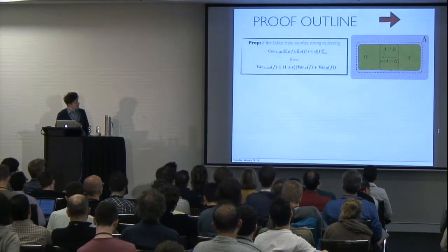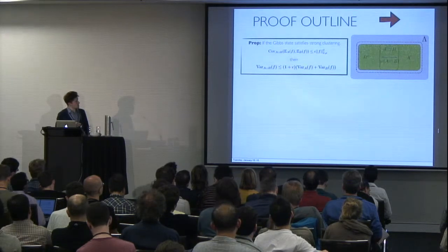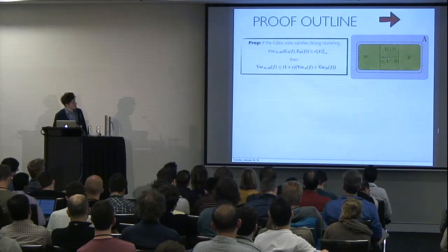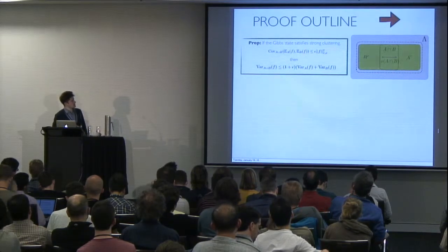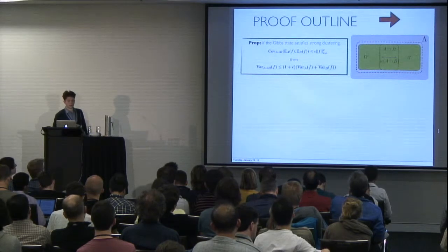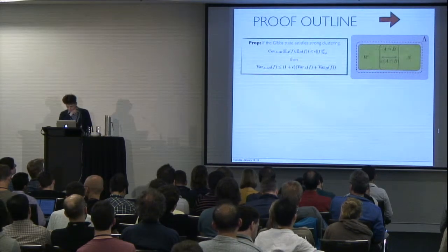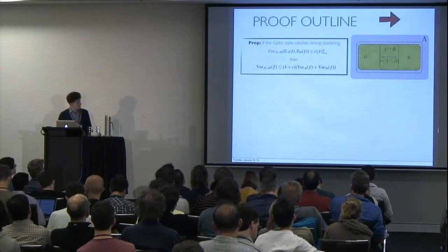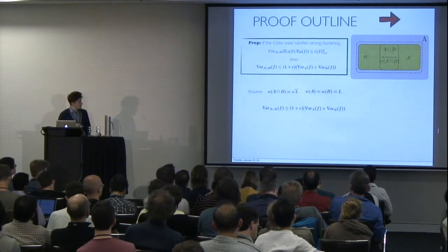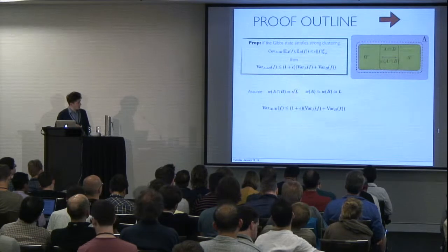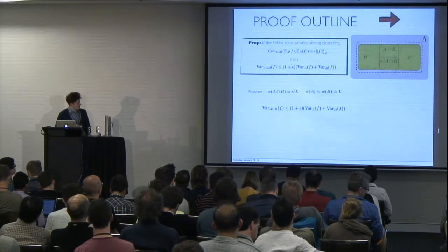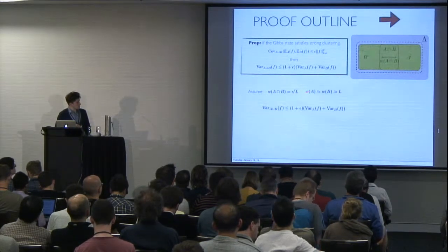But this additive upper bound is modified by a small epsilon term. And the small epsilon term is exactly the term you get in the notion of strong clustering. Once we have this,